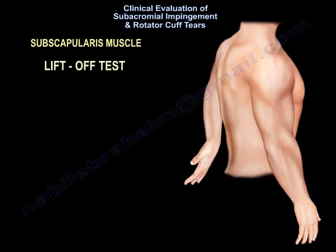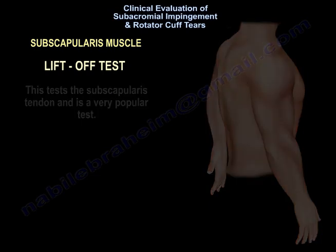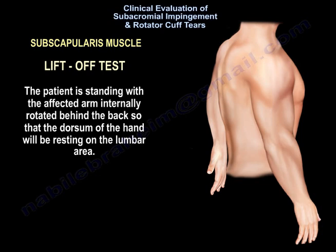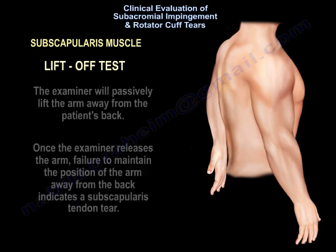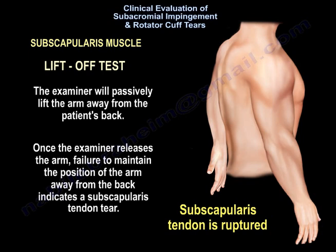The lift-off test tests the subscapularis tendon and is a very popular test. The patient is standing with the affected arm internally rotated behind the back so that the dorsum of the hand rests on the lumbar area. The examiner passively lifts the arm away from the patient's back. Once the examiner releases the arm, failure to maintain the position away from the back indicates a subscapularis tendon tear.